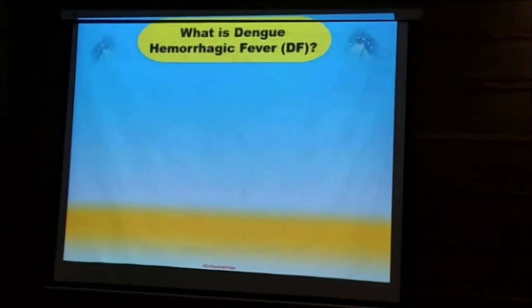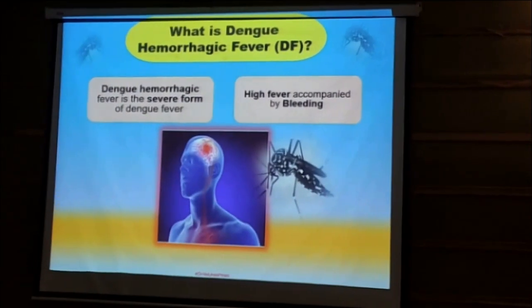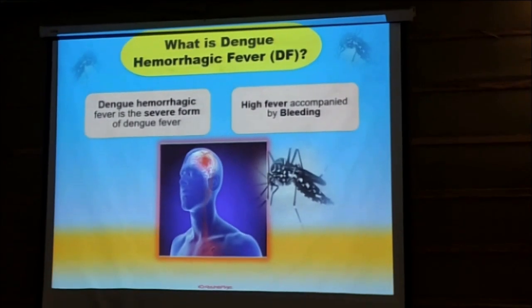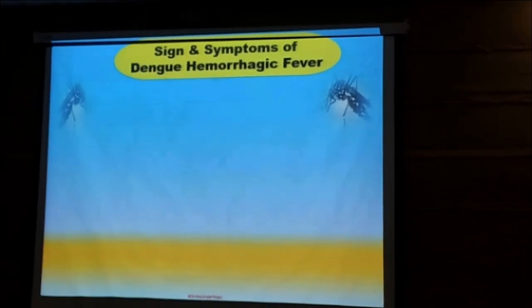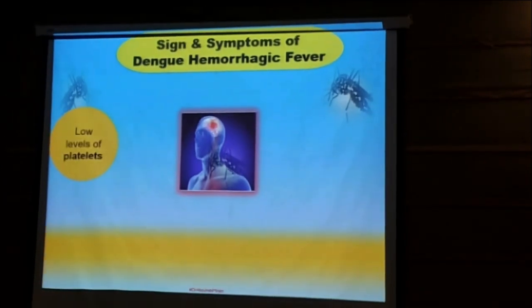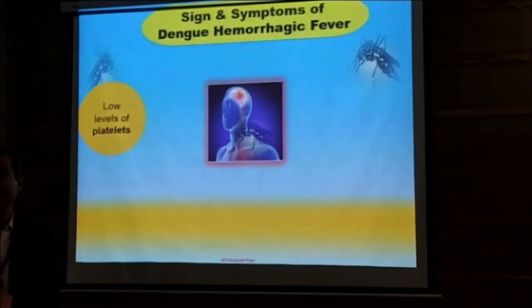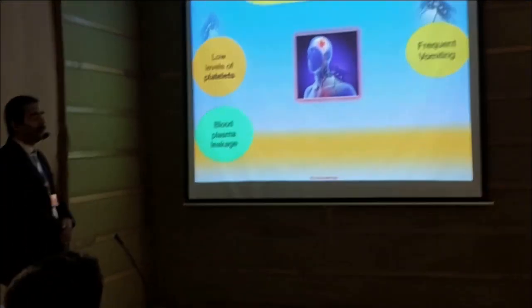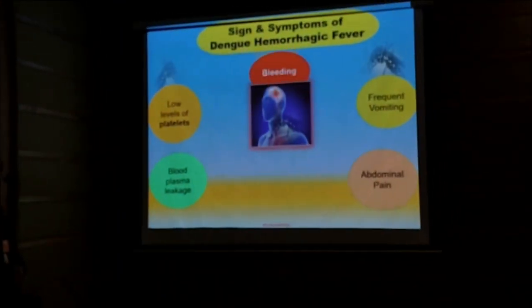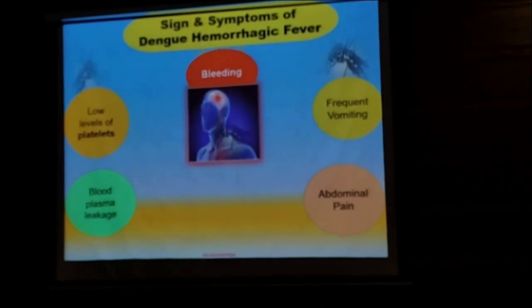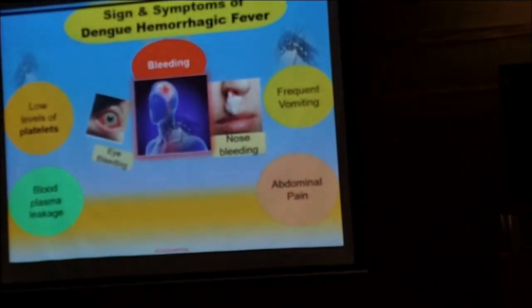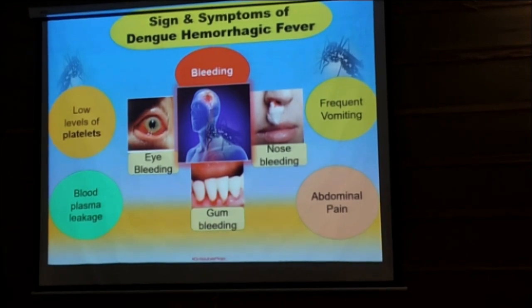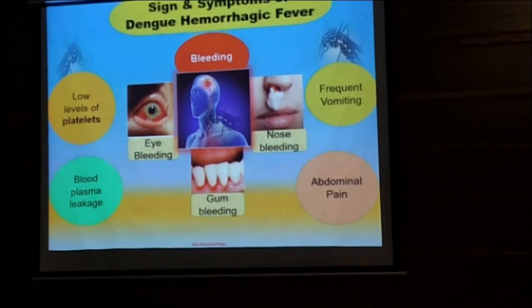After the initial manifestation of Dengue fever, this disease can progress into Dengue hemorrhagic fever. So how can we explain Dengue hemorrhagic fever? It is a severe form of Dengue fever, and it is a high fever accompanied by bleeding. The first sign is a low level of platelets, which causes bleeding in large numbers of patients. After this, there is frequent vomiting, blood plasma leakage within the body, abdominal pain, and finally bleeding. This bleeding can be in the form of nose bleeding, eye bleeding, and gum bleeding. This is the final stage or secondary form of infection caused by the Dengue virus, and it is very life-threatening.